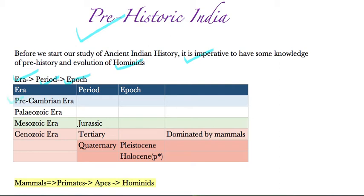The four eras are: the Pre-Cambrian era, the Paleozoic era, the Mesozoic era — under which the Jurassic period falls — and the last era, which is the present era, the Cenozoic era. We are currently in the Cenozoic era, which has different periods within it.